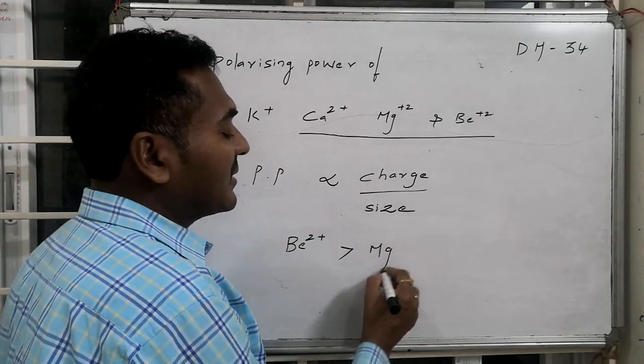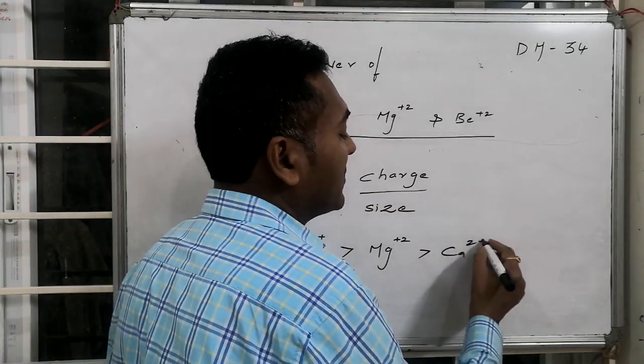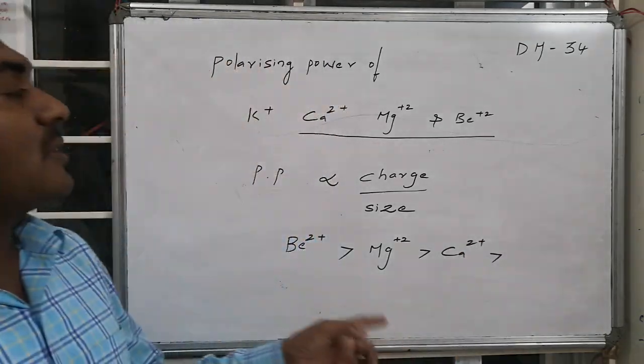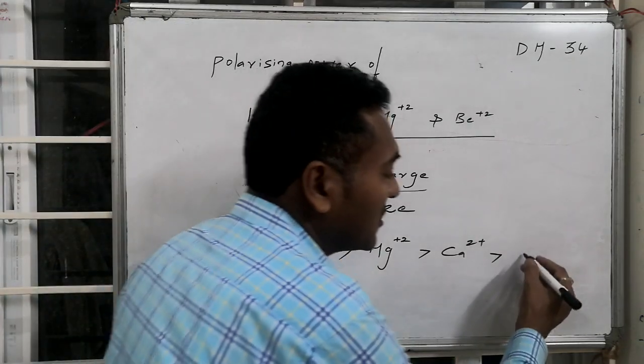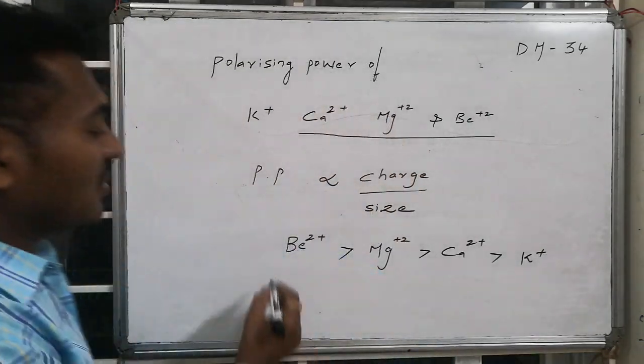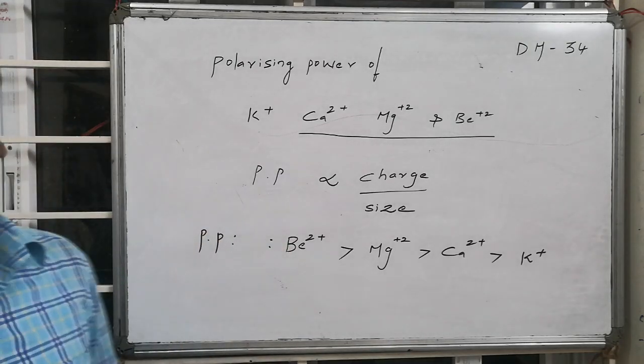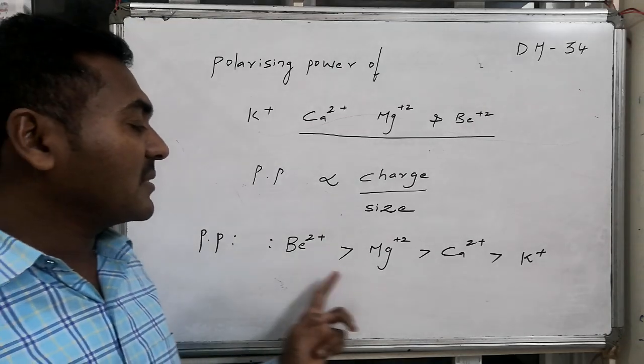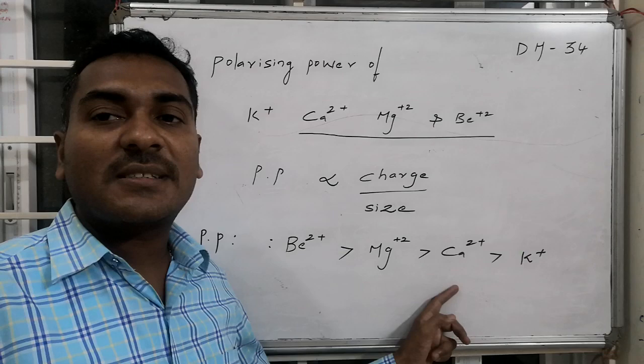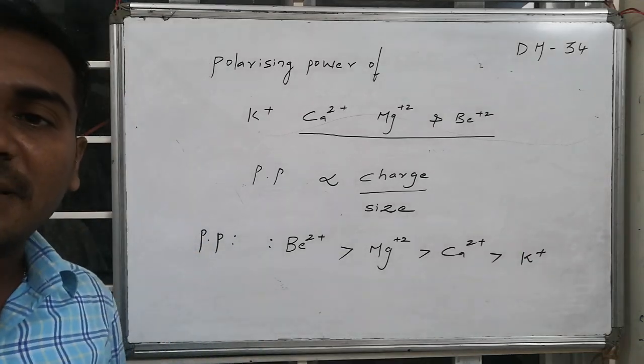Beryllium followed by Magnesium 2+, followed by Calcium 2+. Compare it to Calcium 2+, 1 unit positive charge. Almost all size of Calcium and Potassium remain same. Therefore Potassium maintains lower polarization power. Polarization power is the property of the cation. This polarization power is highest for Beryllium, next is for Magnesium 2+, next is for Calcium 2+, and the lowest polarization power is present for Potassium+.